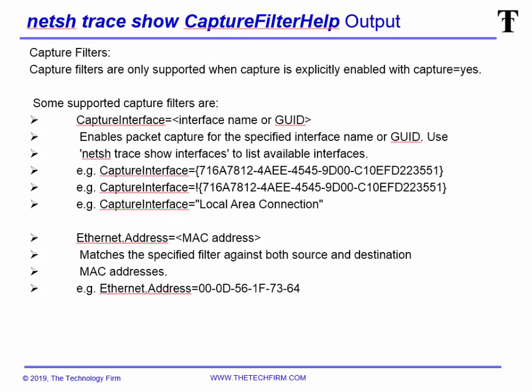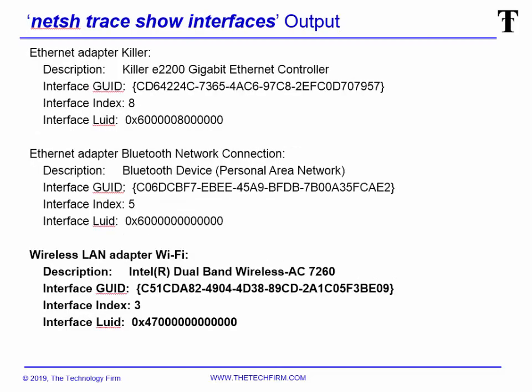netsh trace show capture filter help — this is the big thing people asked me last time. How do I capture from just my ethernet, just my Wi-Fi? How do I capture for a specific MAC address or IP address? Well, this is how you do it — there are capture filters built into the netsh trace command. This is a very small excerpt; I don't know how many pages this was, but I only took two small snippets to show you examples of some of the common things you may want to know about, including the interface — local area connection — based on whatever you found from the show interfaces command.